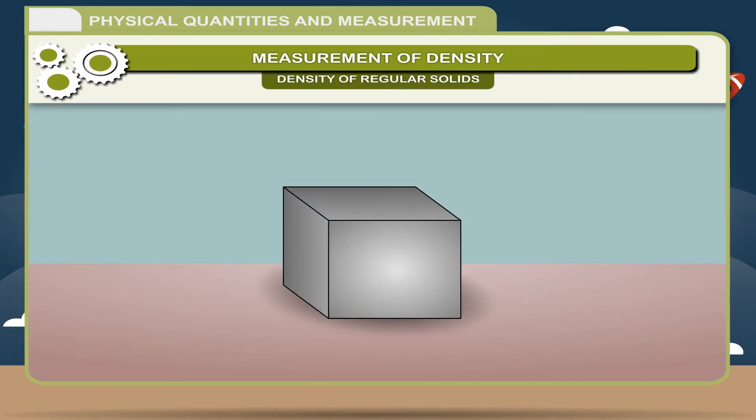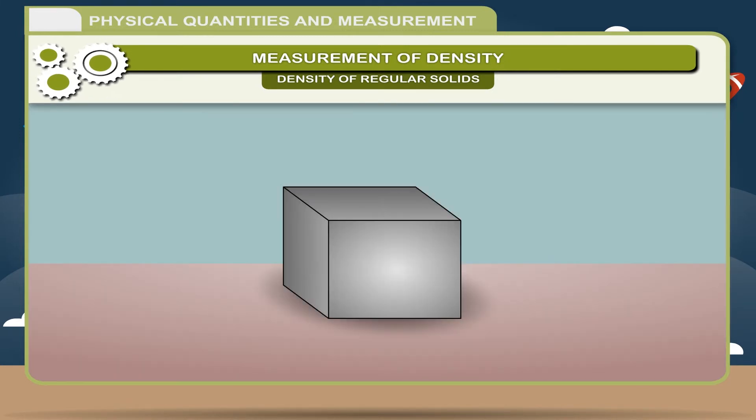Density of regular solids: The density of a solid can be measured by finding its mass and volume. The mass m of a substance is obtained by weighing it with the help of a beam balance or physical balance.